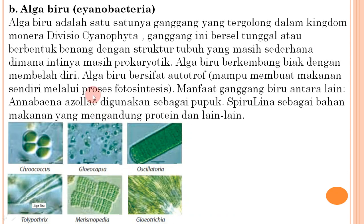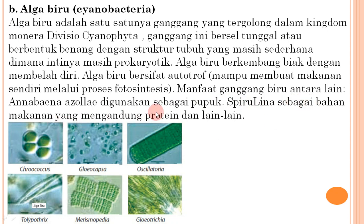Alga biru atau ganggang biru adalah satu-satunya ganggang yang tergolong dalam kingdom Monera, divisi Cyanophyta. Ganggang ini bersel tunggal atau berbentuk benang dengan struktur tubuh yang masih sederhana, intinya masih prokaryotik. Alga biru berkembang biak dengan cara membelah diri dan bersifat autotrop, mampu membuat makanan sendiri melalui fotosintesis. Manfaat ganggang biru antara lain: Anabaena azollae digunakan sebagai pupuk, dan Spirulina sebagai bahan makanan yang mengandung protein.